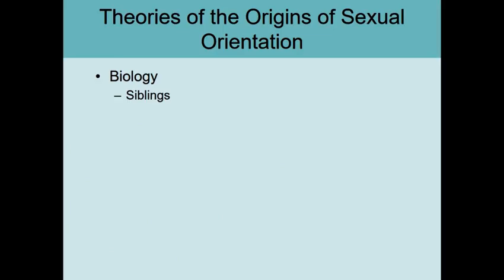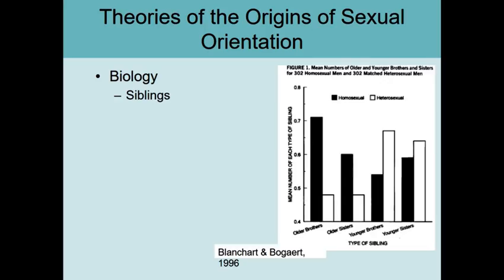We've talked about twins as a special case of siblings since they shared the womb. Now let's talk about whether you have siblings at all. Research from Blanchard and Bogaert from 1996 included 302 homosexual men represented in the black bars and 302 heterosexual men in the white bars, matched for age, income, education level, and other characteristics.